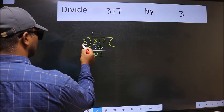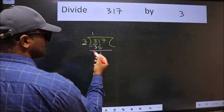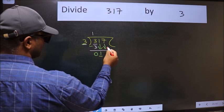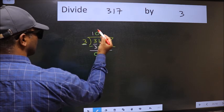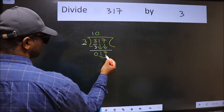Now here we have 1 and here 3. 1 is smaller than 3, so we should bring down the second number. The rule to bring down the second number is we should put 0 here. Then only we can bring down this number. Now 17.